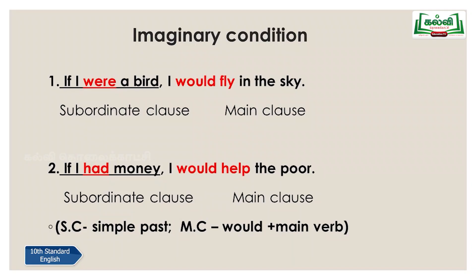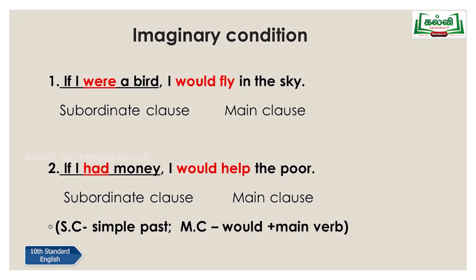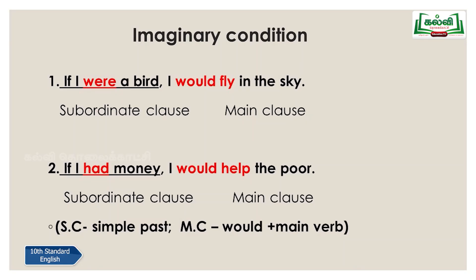The second type of conditional clause is the imaginary condition. As the name suggests, it is an imagination. For example: 'If I were a bird, I would fly in the sky.' The subordinate clause is 'if I were a bird' — we are imagining being a bird, which we cannot actually be. In this imaginary condition, we use 'were' after 'I' in the subordinate clause, even though normally we use 'am' or 'was'. This is a special usage — only in imaginary conditions.